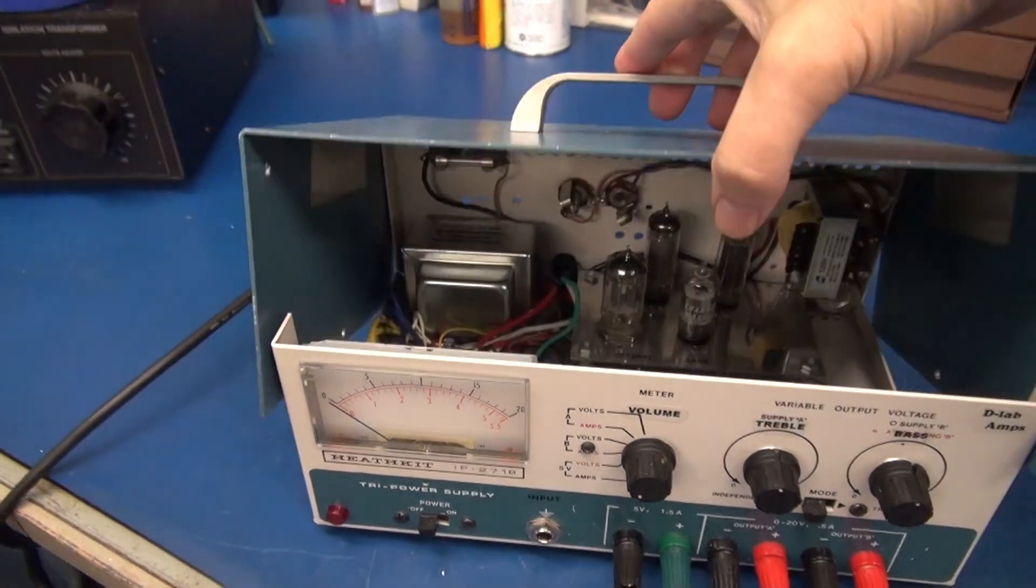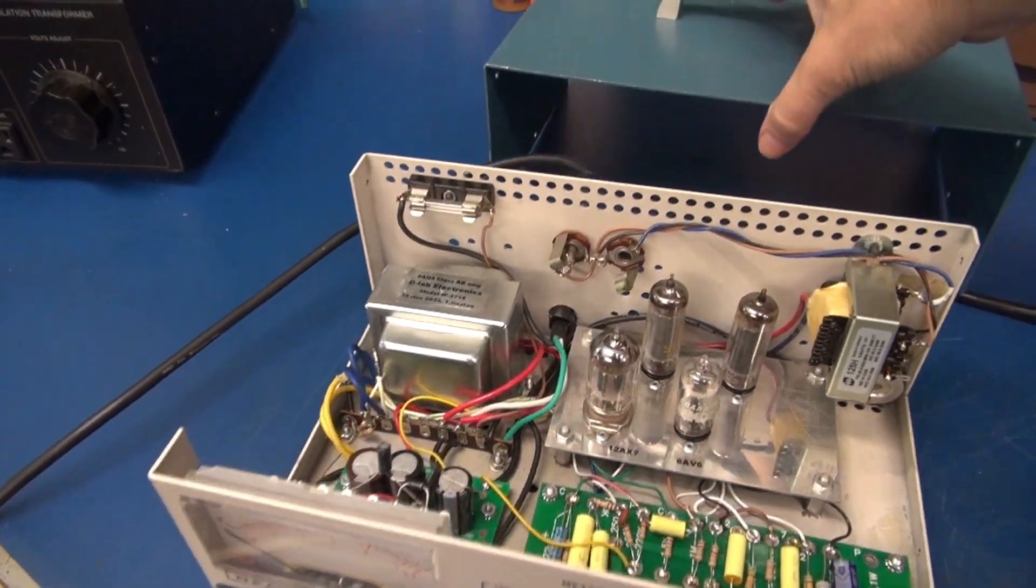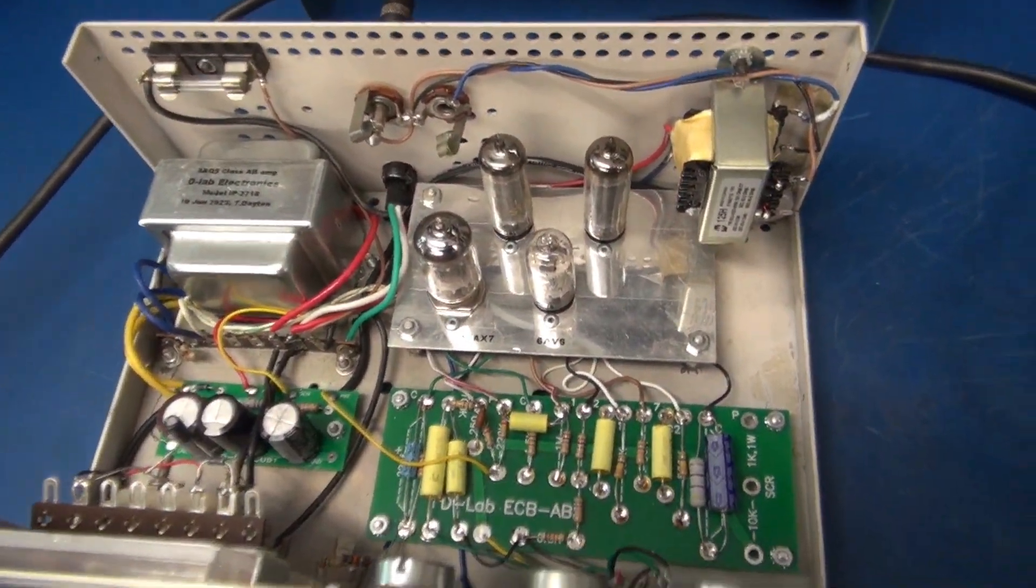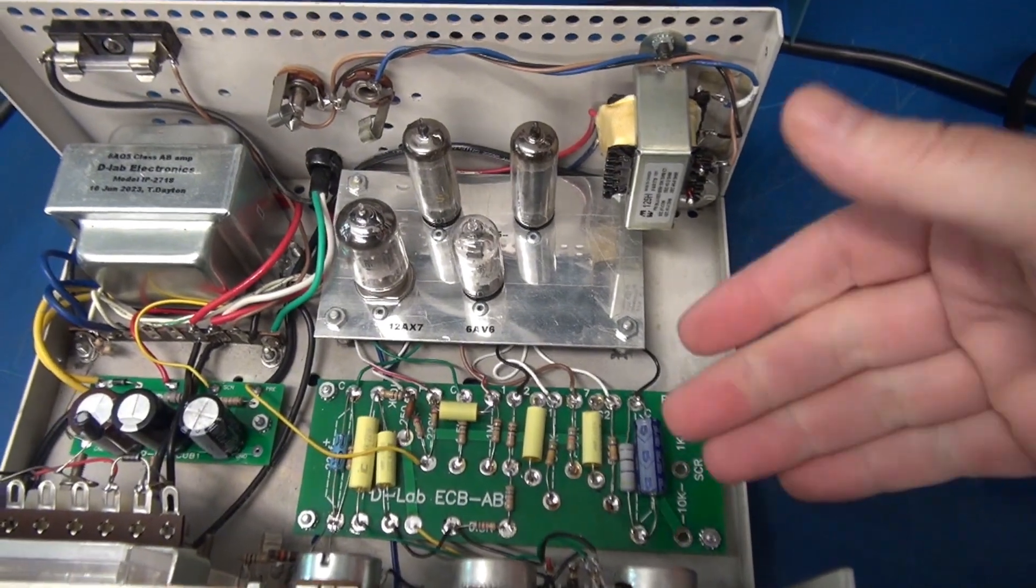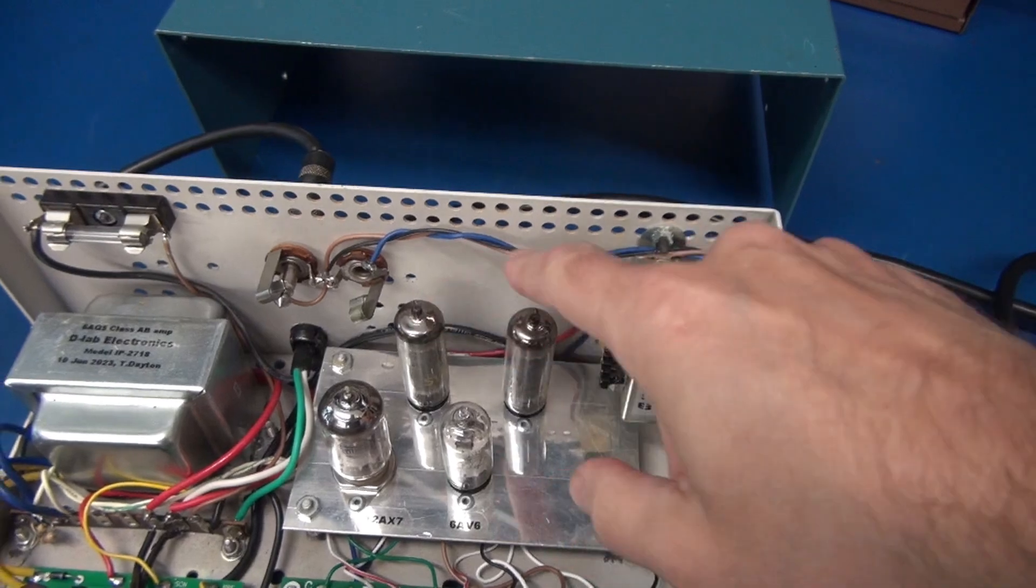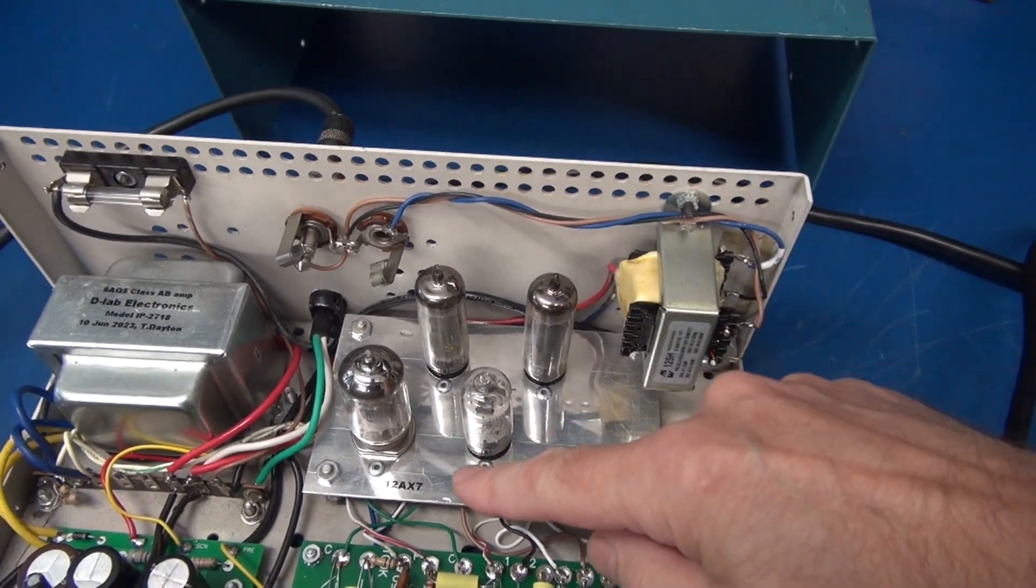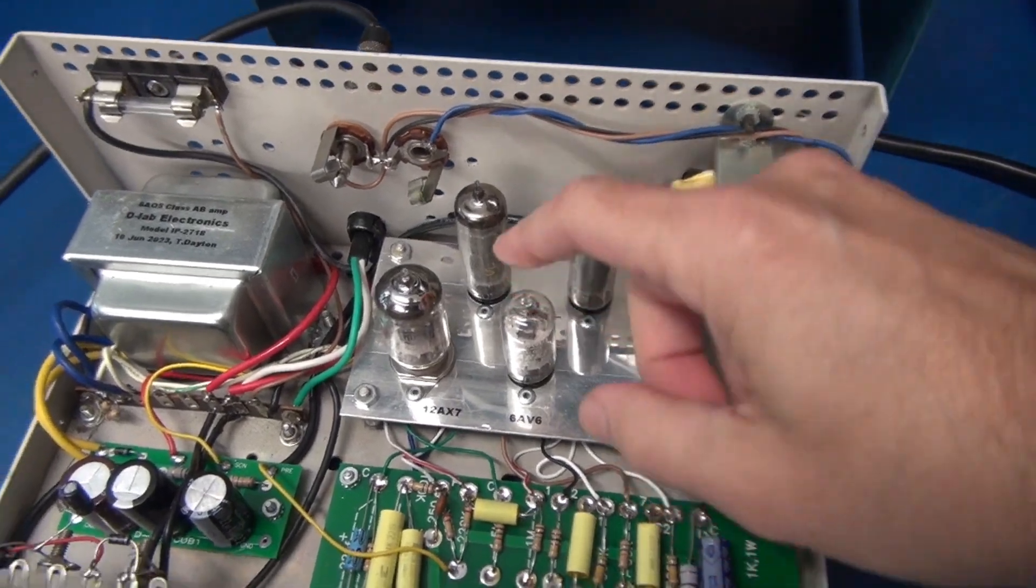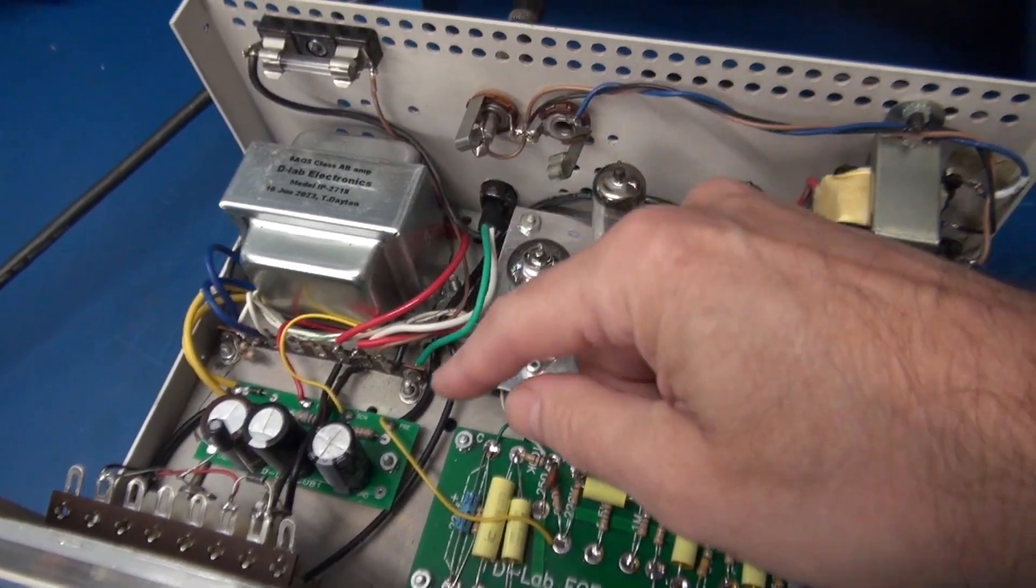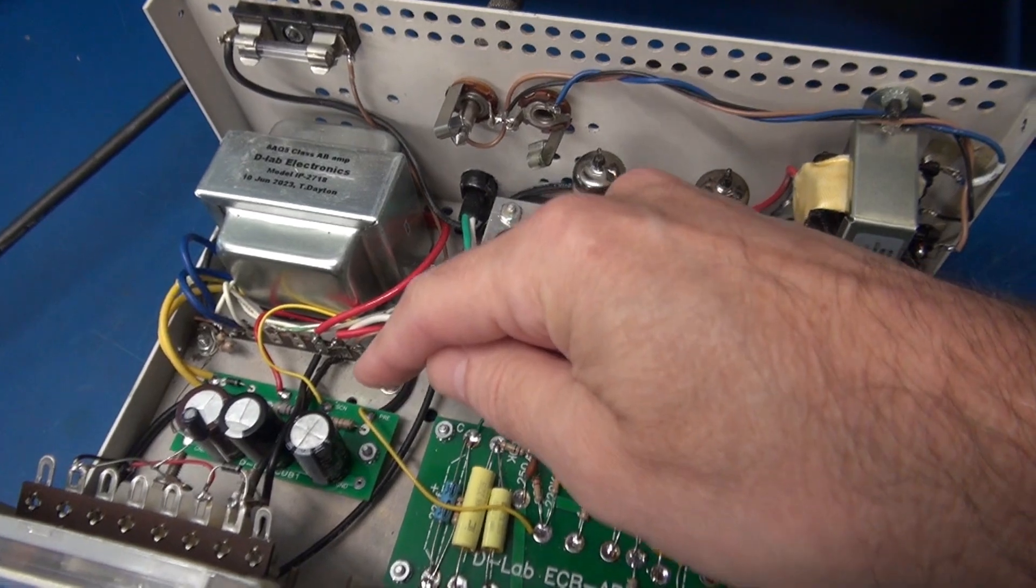Alright, we'll take a quick look under the hood of the retrofit amp. This one features my D-Lab ECB-AB board, which is push-pull for the pair of 6AQ5 output tubes. Preamp is a 12AX7. Inverter is a 6AV6. Power transformer here, and this is my power supply rectifier board.